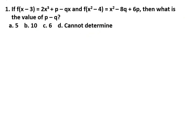First question: if f(x - 3) = 2x³ + p - qx, and f(x² - 4) = x² - 8q + 6p, then what is the value of p minus q?